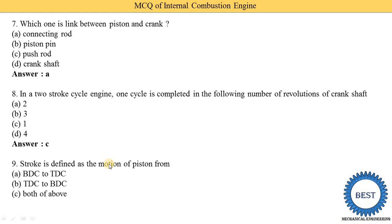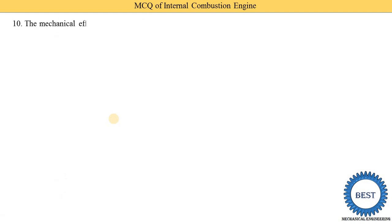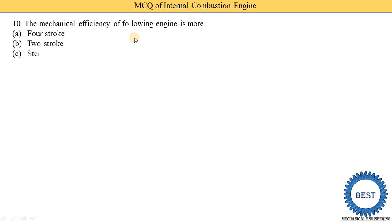Next MCQ: a stroke is defined as — option A: motion of piston from BDC to TDC, option B: TDC to BDC, option C: both of the above, option D: BDC to TDC to BDC. One stroke is equal to BDC to TDC or TDC to BDC, so option C — both of the above — is the correct answer.